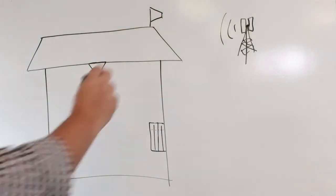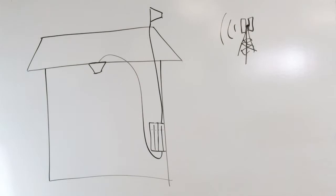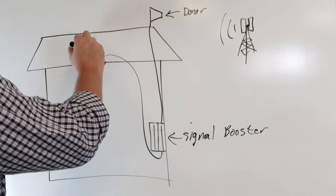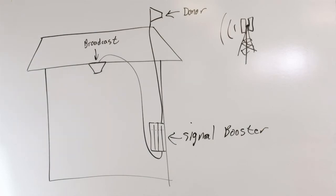The donor antenna is the antenna that goes outside the building to receive and transmit signal to the cellular towers. The broadcast antennas take the signals from the booster and transmit them throughout the indoor spaces of the building.